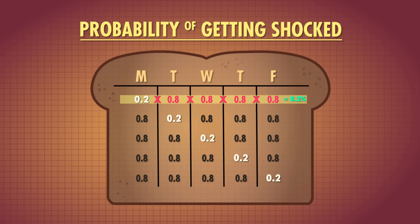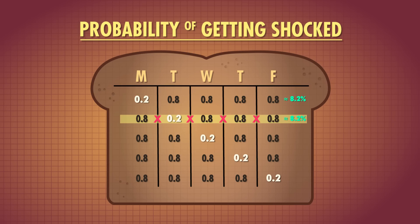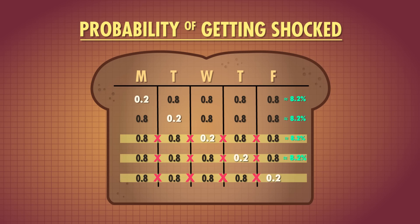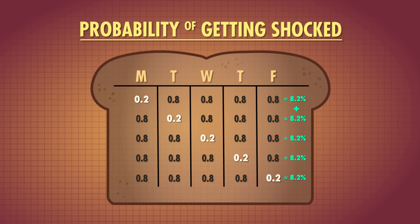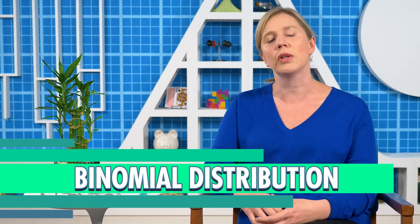That's about an 8.2% chance that you'll get shocked on Monday and not for the rest of the week. Since order doesn't matter in multiplication, each one-shock option also has about an 8.2% chance. Using the addition rule: 5 times 8.2% gives a 41% chance of just one shock this week. That was a lot of work just to figure out whether it's a good idea to have toast. Thankfully there's a more compact formula — the Binomial Distribution Formula — which takes the math we just did and simplifies it.